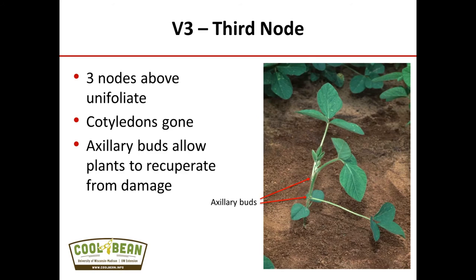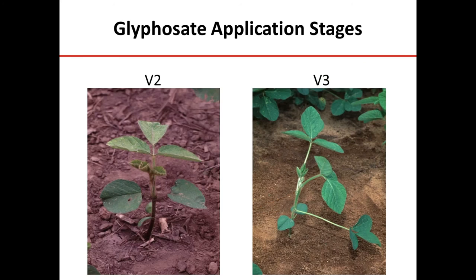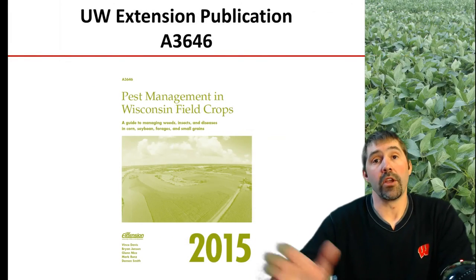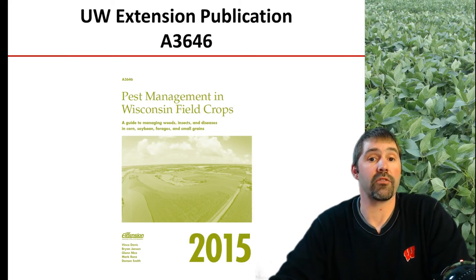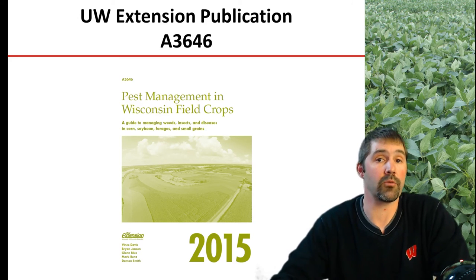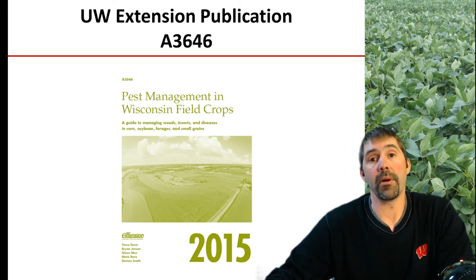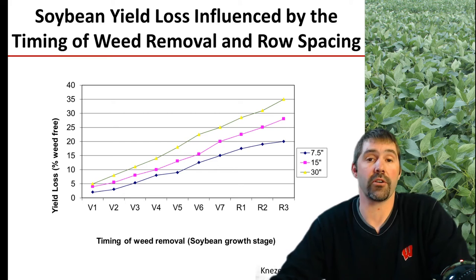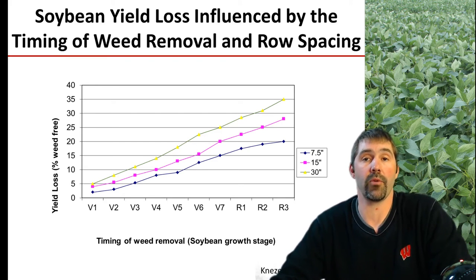Moving on to V3, at this point we start to see the cotyledons — which were the primary source of nutrition to get that soybean plant up and growing through the V2 growth stage — basically slough off the plant. The axillary buds then can allow these plants to continue to regrow following any type of mechanical or plant damage. This is also the optimal time where growers need to be thinking about going out and making a glyphosate or weed control strategy application, somewhere between this V2 and V3 growth stage.